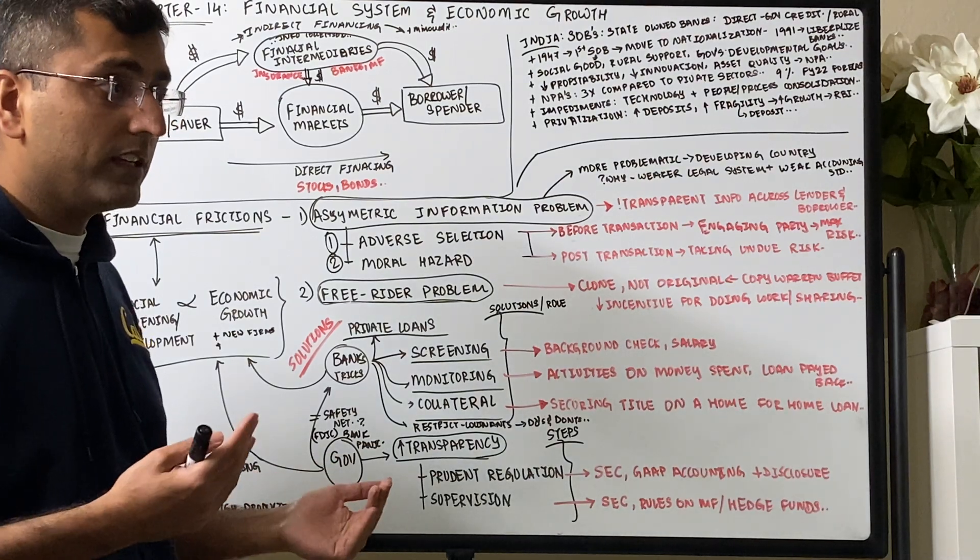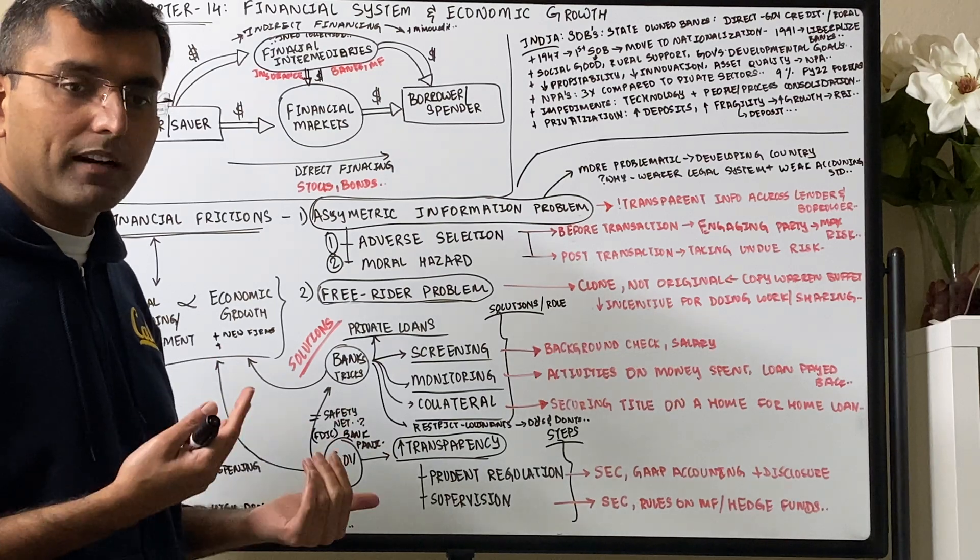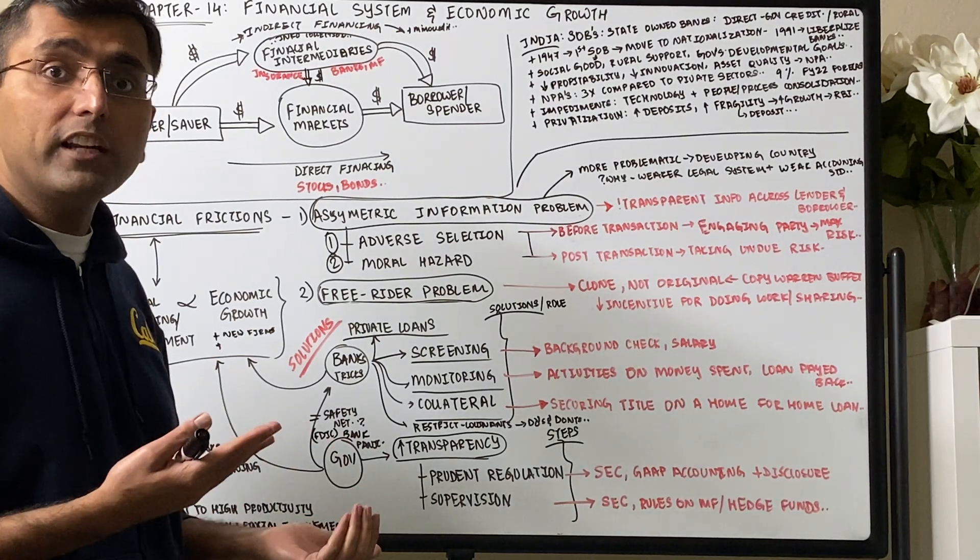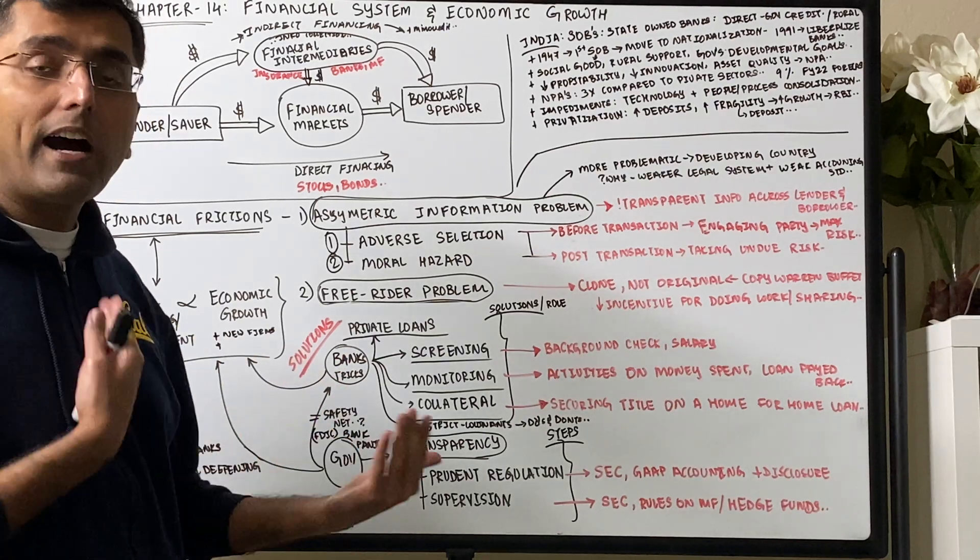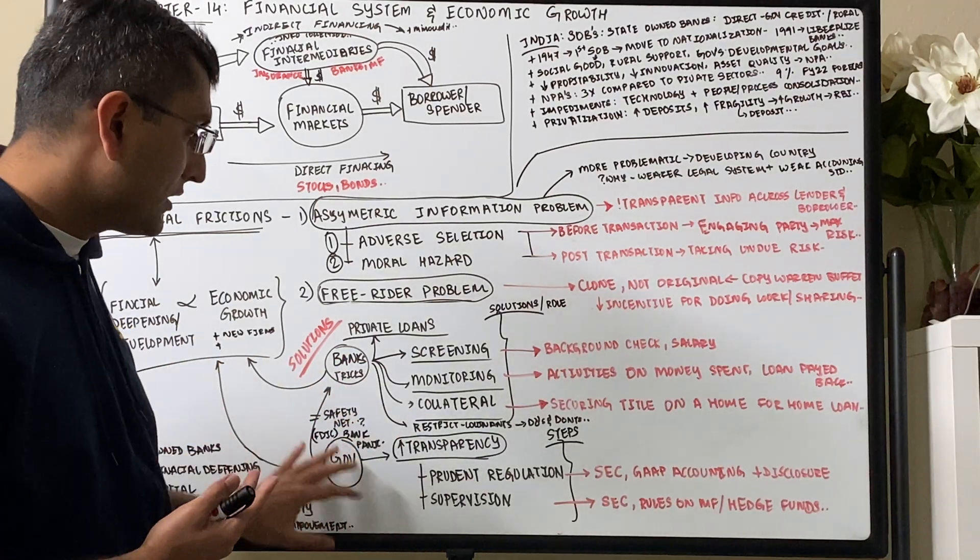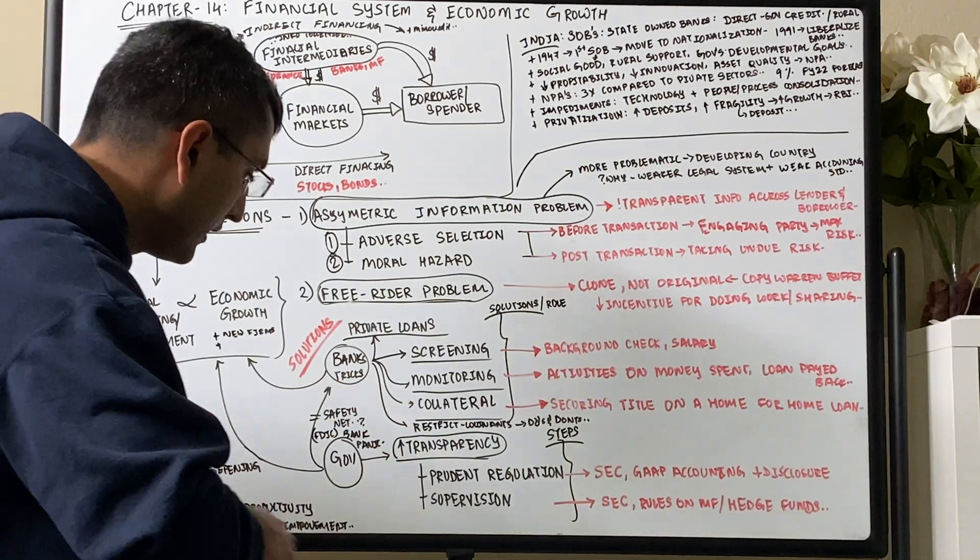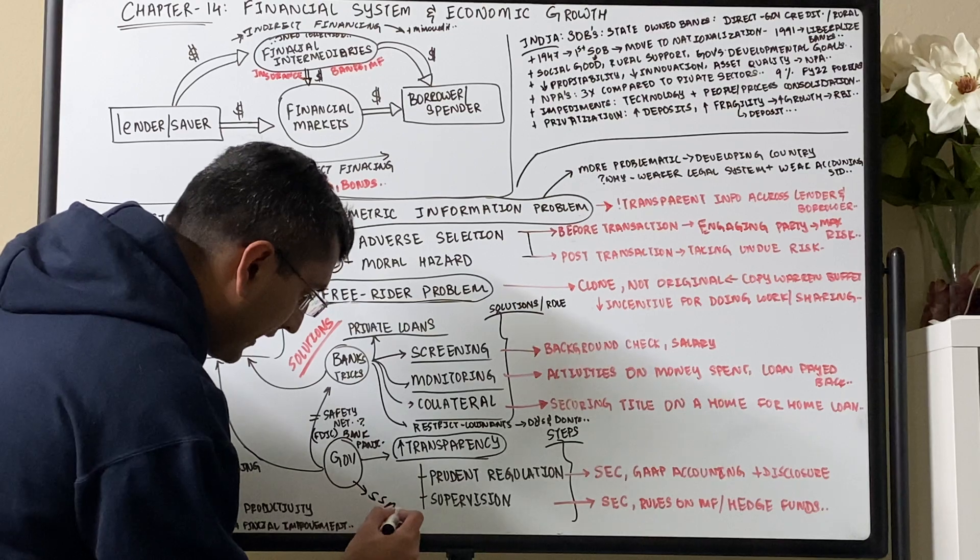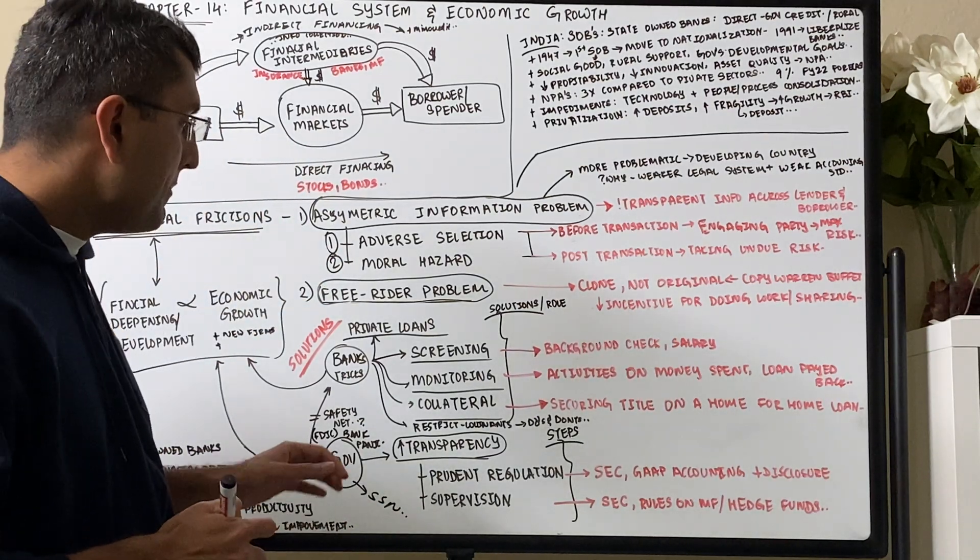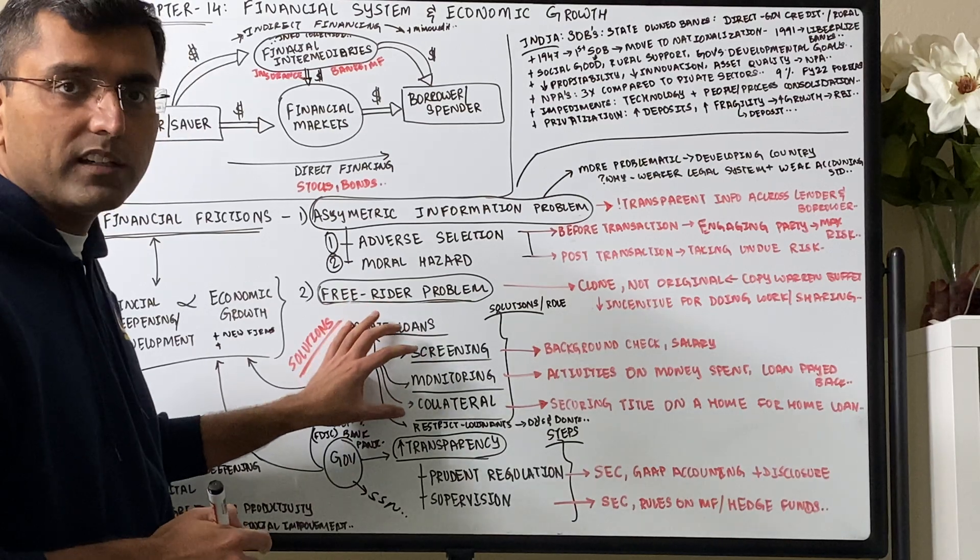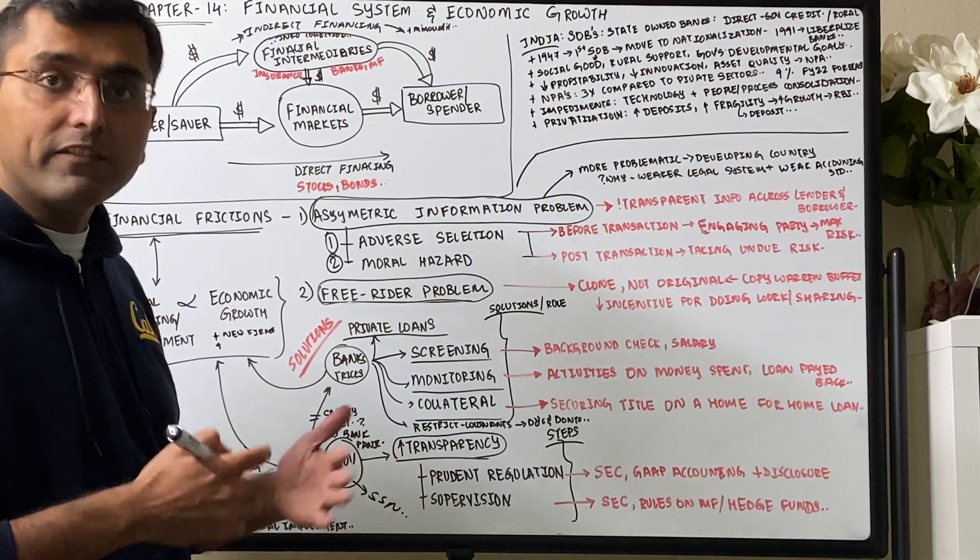The government can also help with credit score. Like every borrower today has a taxpayer ID, they have a social security number, so they know my credit worthiness because they'll keep track of how am I doing. So government has a role to play in unique identification number, social security, but like how can you provide that transparency. And at the same time encouraging these financial intermediaries to thrive, but providing them with a safety net like FDIC.